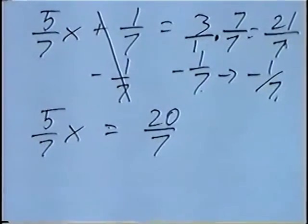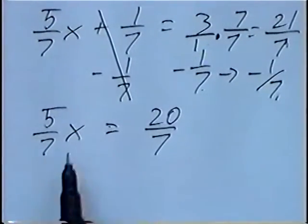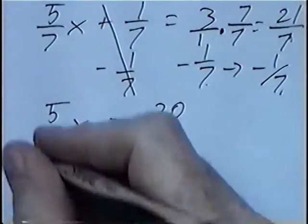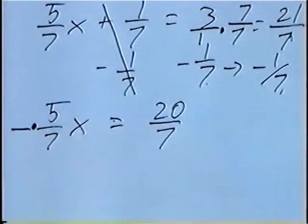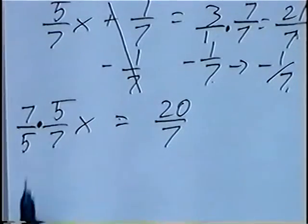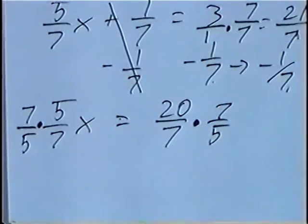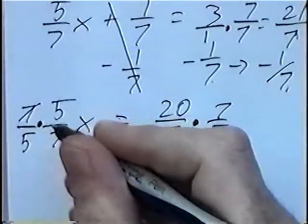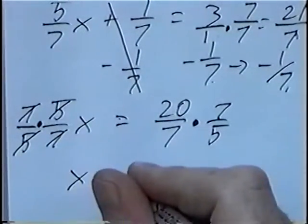And last step for the question. We have 5 over 7 times x equals 20 over 7. If you're multiplying a fraction times a variable, a good way to get rid of that fraction is to multiply by the reciprocal. A reciprocal is the same fraction but flipped upside down. So instead of 5 over 7, we'll flip it upside down and have 7 over 5. If we multiply one side by 7 over 5, we'll multiply the other side by 7 over 5 also. When you multiply reciprocals, reciprocals cancel — 7 divided by 7 cancels, and 5 divided by 5 cancels. So we're left with x.